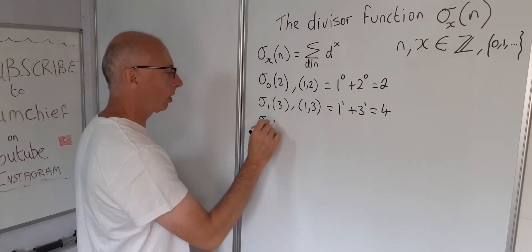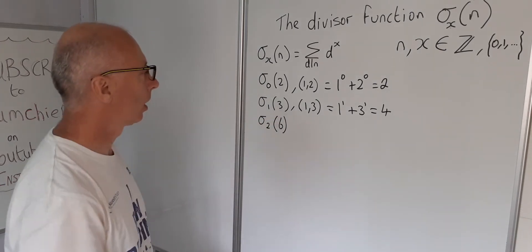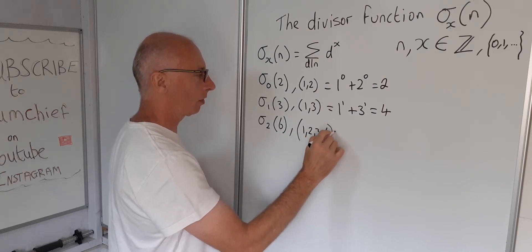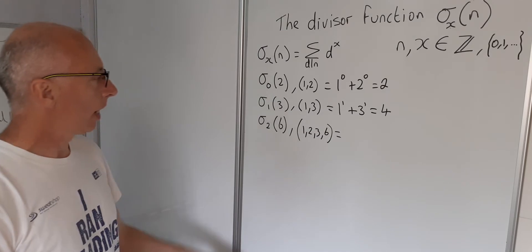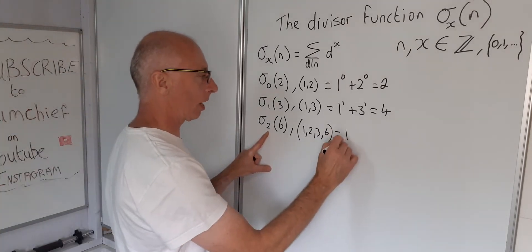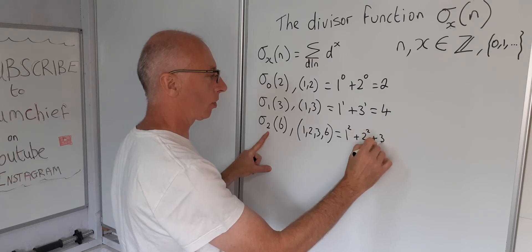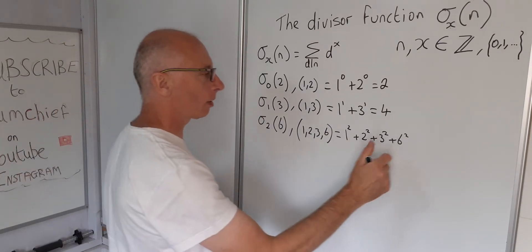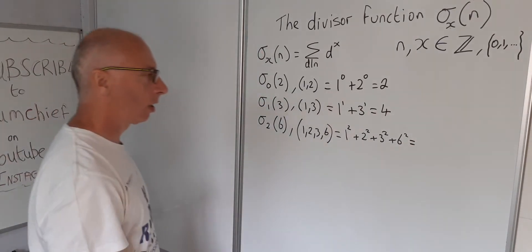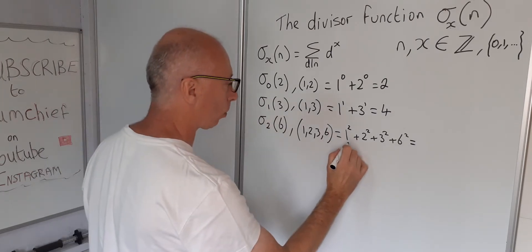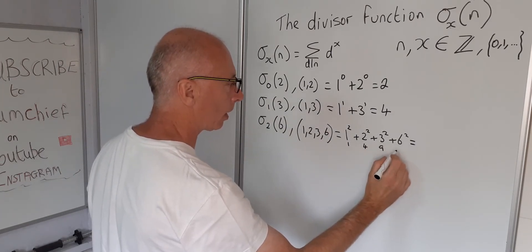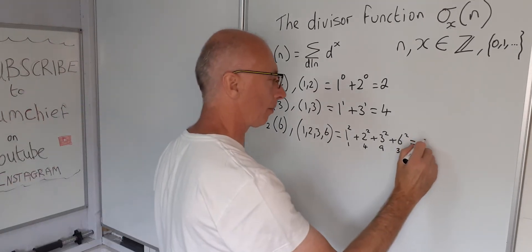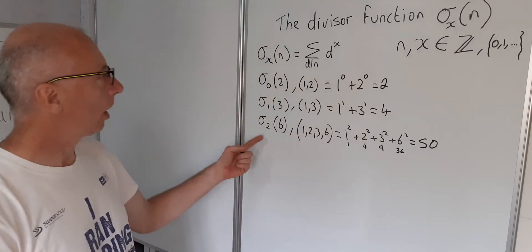Let's try X=2 with n=6. The divisors of 6 are 1, 2, 3, and 6. Raising each to the power of 2 gives 1 squared plus 2 squared plus 3 squared plus 6 squared, which is 1 plus 4 plus 9 plus 36, giving us 50.